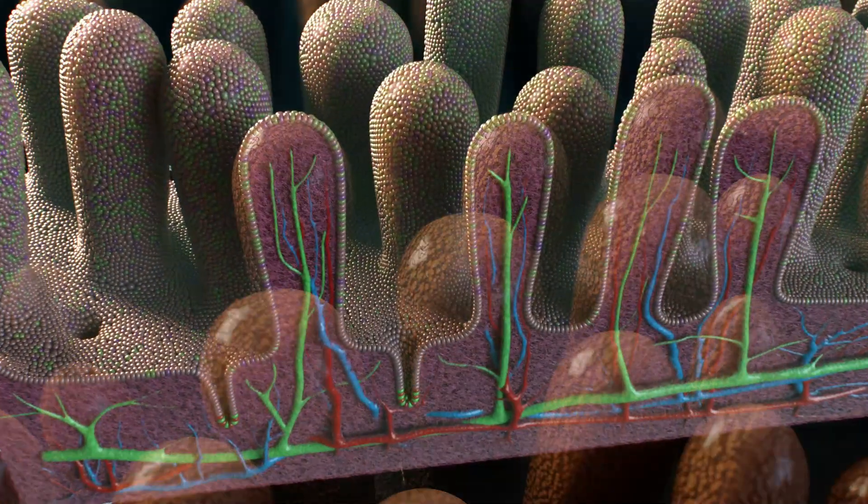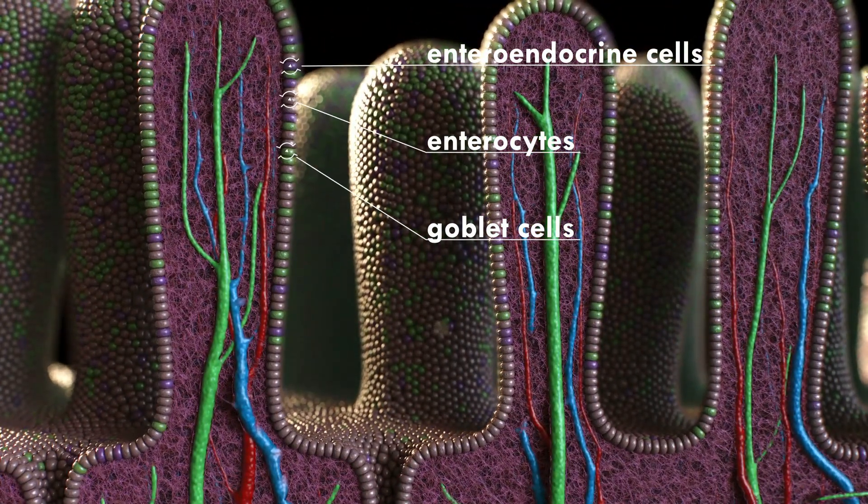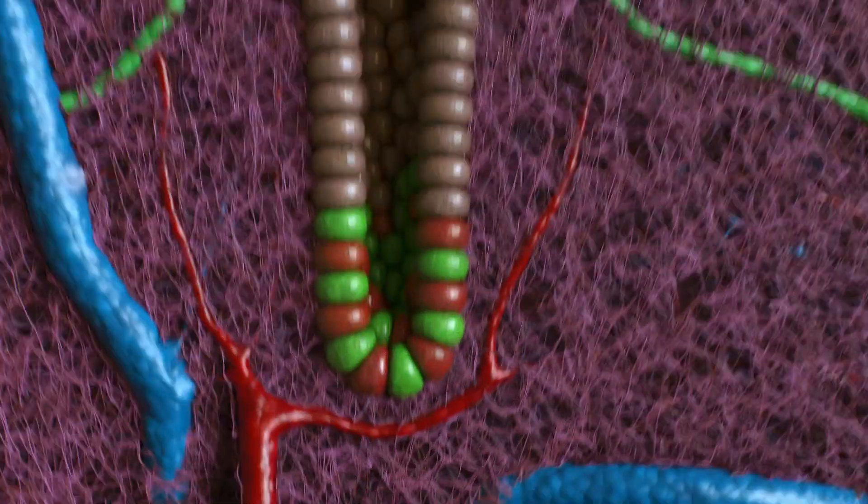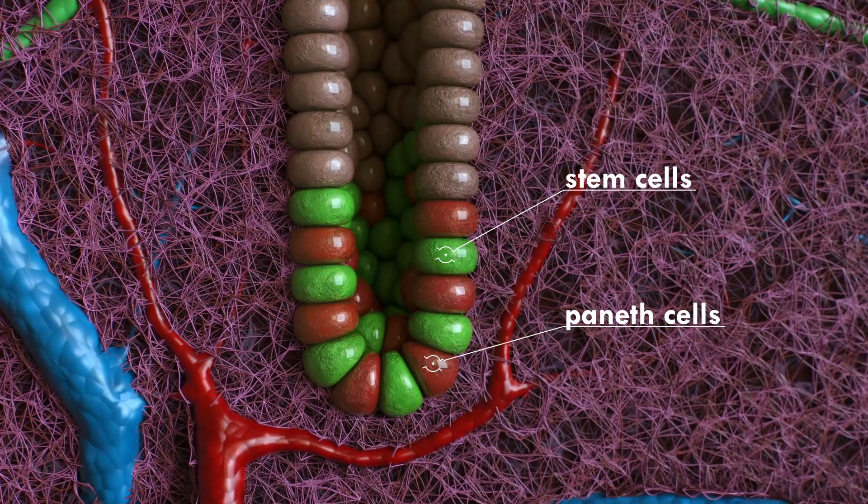The epithelium is made of various cell types found in specific locations. In particular, the bottom of the crypts contain stem cells which are responsible for the continuous regeneration of the epithelium.